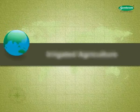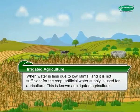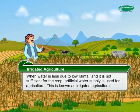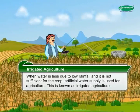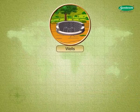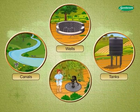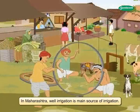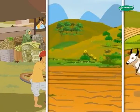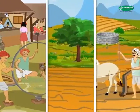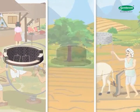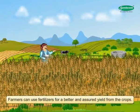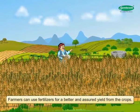Irrigated Agriculture: When water is less due to low rainfall and is not sufficient for the crop, artificial water supply is used for agriculture. This is known as Irrigated Agriculture. Wells, canals, tanks, and tube wells are the sources of irrigation. In Maharashtra, well irrigation is the main source of irrigation. It is an independent source for individual farmers, who use it when required. When water is available for irrigation, farmers can use fertilizers for a better and assured yield from the crops.